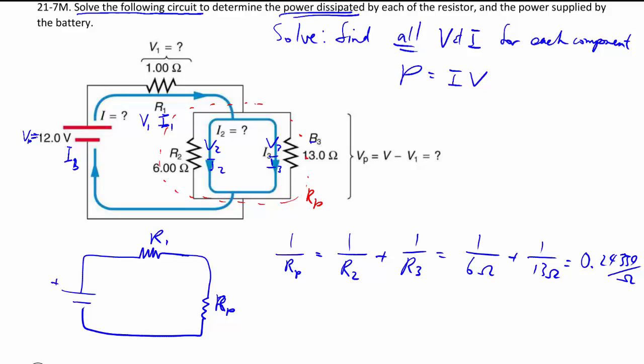Again, that doesn't give us the equivalent resistance itself. It gives us the reciprocal. So we have to flip it back around. That's a 3, by the way, sorry for the messy script. 4.1 ohms or so.